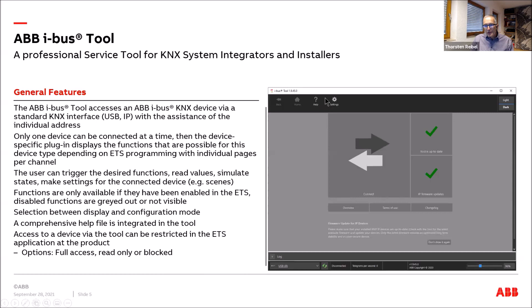A comprehensive help file is available — click on 'Help' in the toolbar and context-sensitive help appears on the right side. You can also restrict access via ETS parameters for each product: full access allows both reading and writing via the iBAS tool; read-only means you can only see states and actual values; or you can completely block access via the iBAS tool.